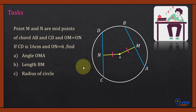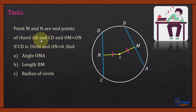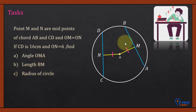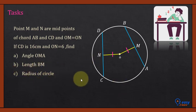Home task: A circle diagram is given where points M and N are the midpoints of chords AB and CD respectively, and OM equals ON. If CD is 16 centimeters and ON is 6 centimeters, find angle OMA, length BM, and the radius of the circle. Hint: there will be a 90-degree angle — use the right-angle triangle to find the radius.